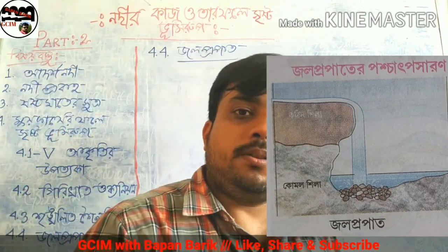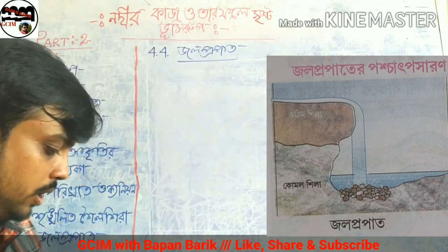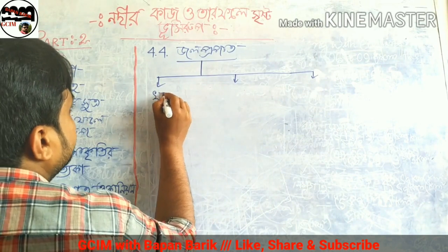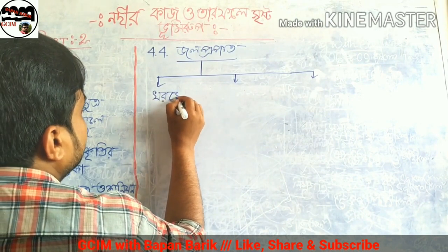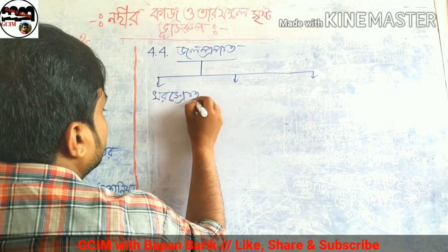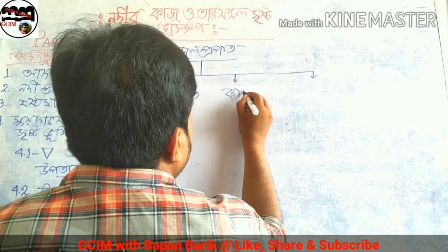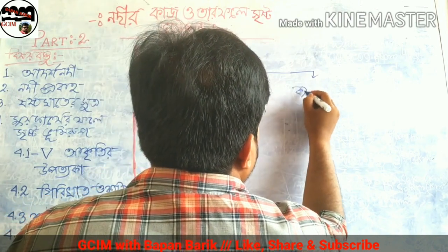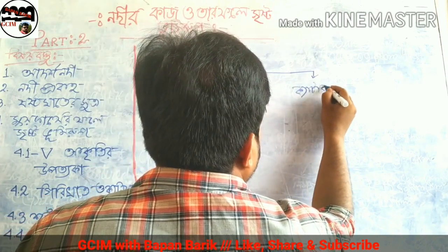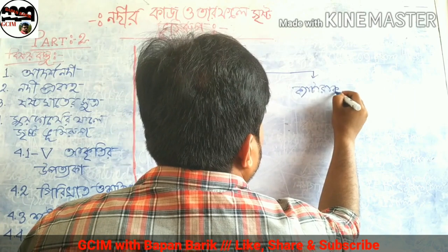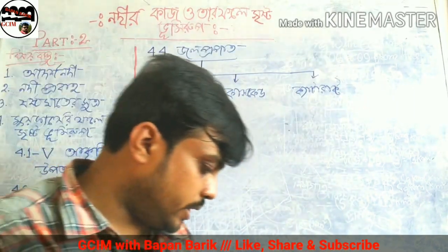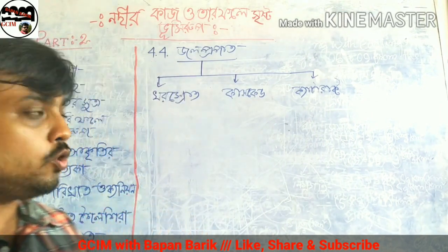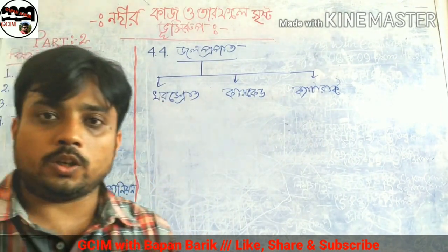Waterfalls are classified into different types. The first type we will discuss is called a Cascade, and then there is a Cataract. These are three types of waterfalls we can identify: Cascade, Cataract, and Rapid — each with distinct characteristics.